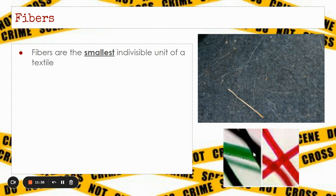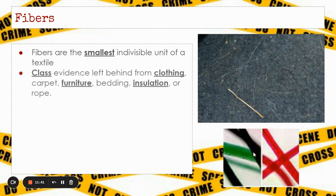Fibers are the smallest indivisible unit of a textile or of clothing or cloth. Fibers are also class evidence. They're left behind from things like clothing, carpet, furniture, bedding, insulation, or rope.